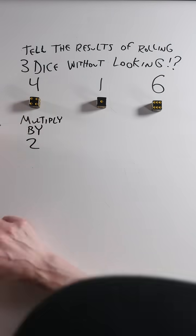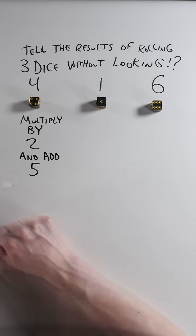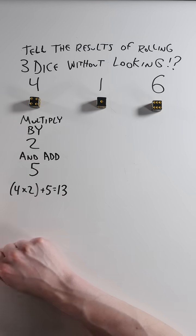Have them multiply the first one by two and then add five. Four times two plus five equals thirteen.